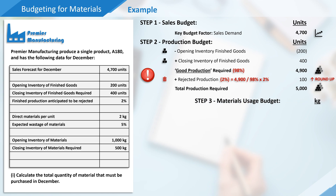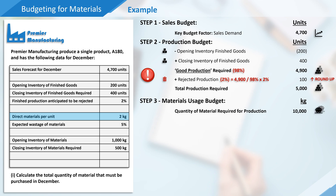The next step is the materials usage budget, where we'll work out how much material we need to meet production of 5,000 units. The first part of this calculation is straightforward — we're told that each finished unit requires 2kg of material. And 5,000 units multiplied by 2kg gives a figure of 10,000kg of material required to meet production.